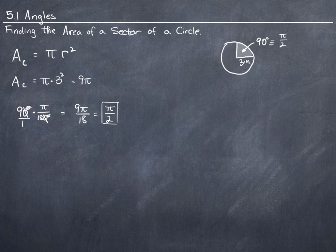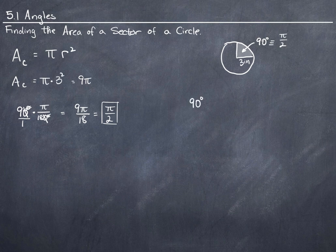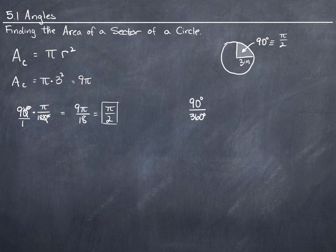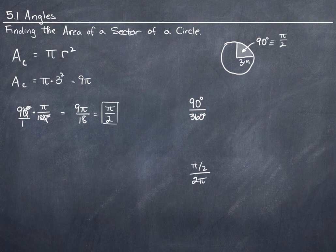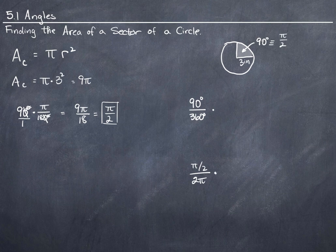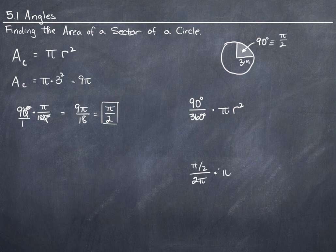So I'm going to say that 90 degrees out of 360 degrees is the portion of the circle, the percentage, or the fraction of the circle that I'm interested in. If I'm working in radians, then I have pi over 2 out of the whole circle, 2 pi. And that percentage of the circle times the area of the circle, times pi r squared.